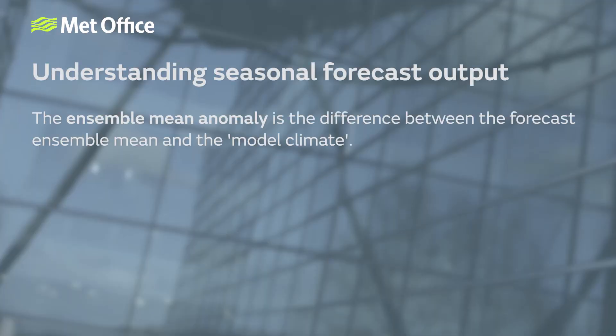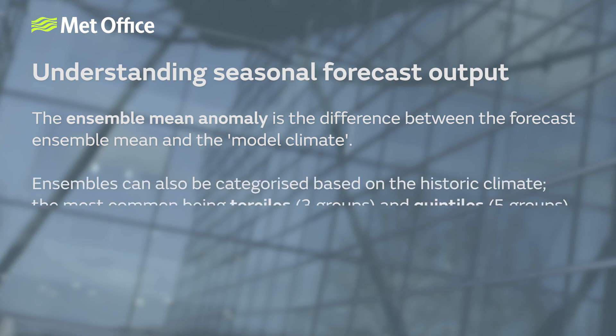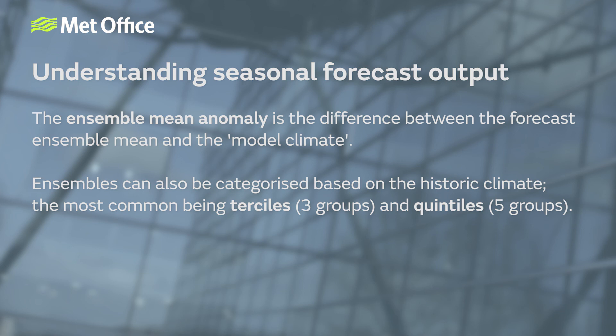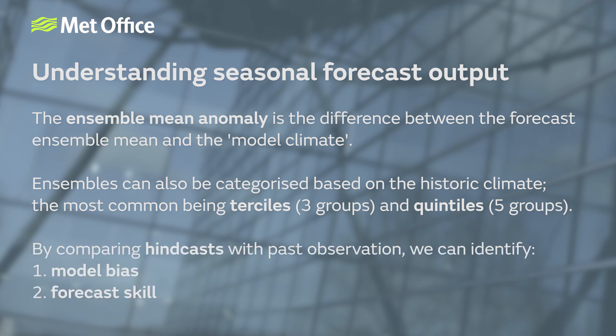Thanks very much, Tammy. In this video we've discussed some common approaches to displaying forecast data, including the ensemble mean anomaly — the difference between the forecast ensemble mean and the model climate. Another approach is to categorize forecasts based on the historic climate, with the most commonly used categories being terciles (three groups) and quintiles (five groups). We've discussed the importance of hindcasts, which allow us to identify model bias and forecast skill for your area and season of interest. In our next video, we will explain some of the uses of seasonal forecasts and give some examples of how they're being used in real life.